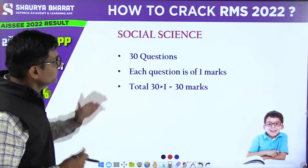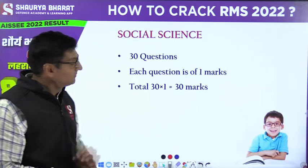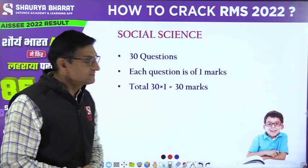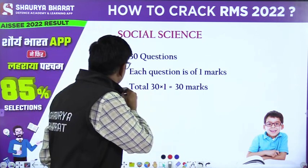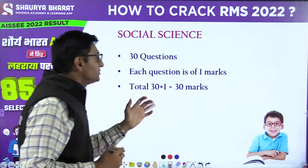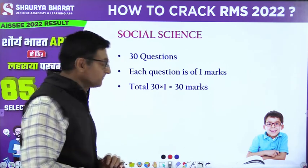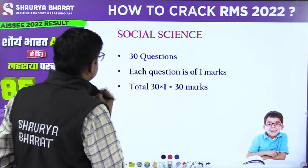Social Science contains 30 questions. Each question is of 1 mark, and the total is 30 into 1, that is 30 marks.